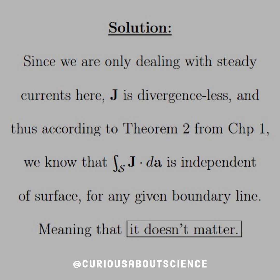The solution to this is surprisingly easy, given what we established back in chapter 1. Before we get to that, let's first consider the fact that we're using a steady-state current here. And if we recall from the continuity equation, since dρ/dt is equal to 0 — since it's steady, we're not changing — that means that j is divergence-less.